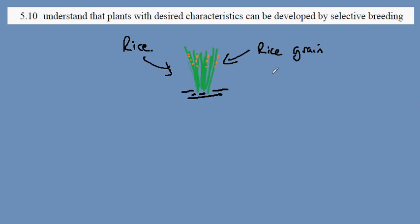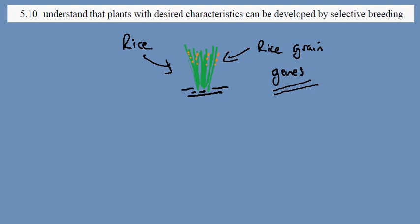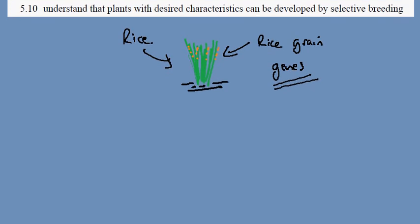The number of rice grains is under the control of genes. The farmer wants to improve the number of rice grains per plant and in so doing to increase the yield.